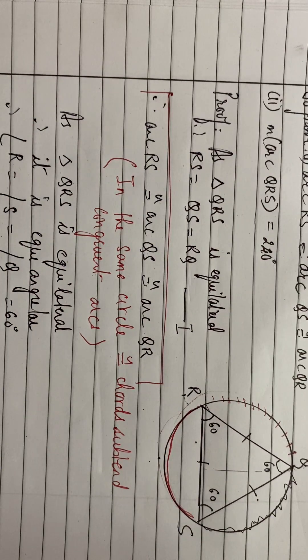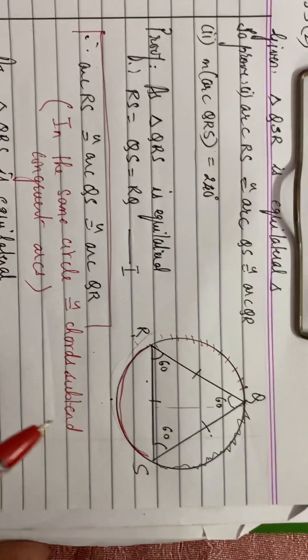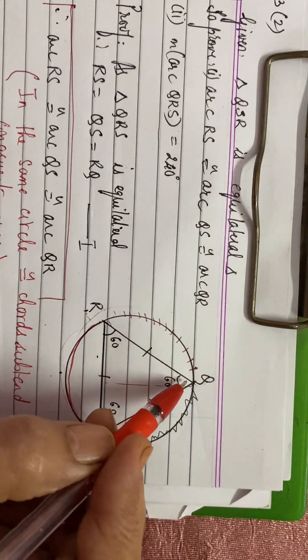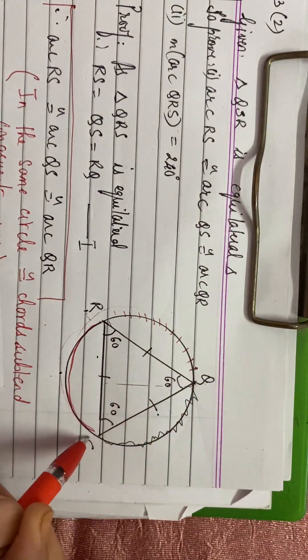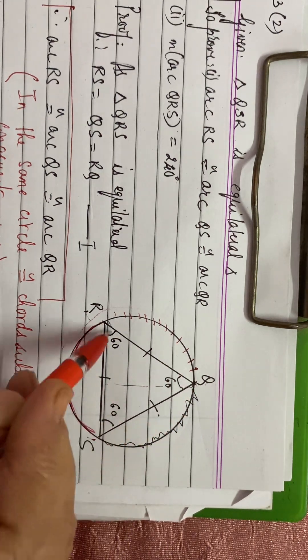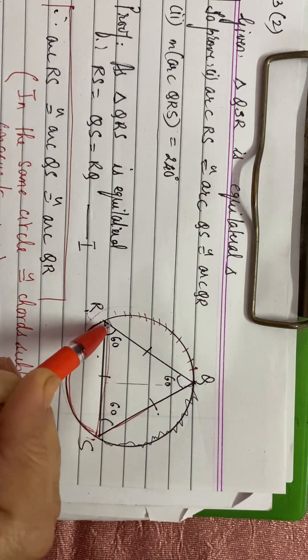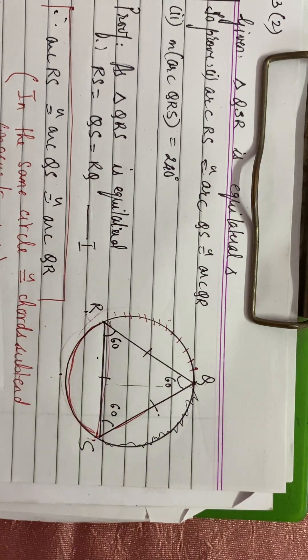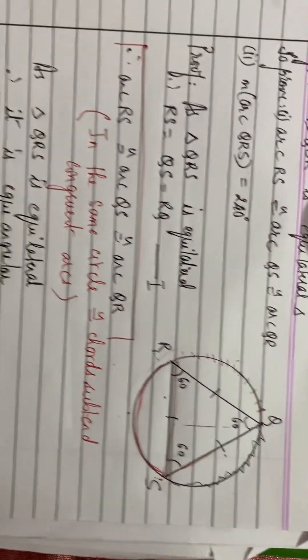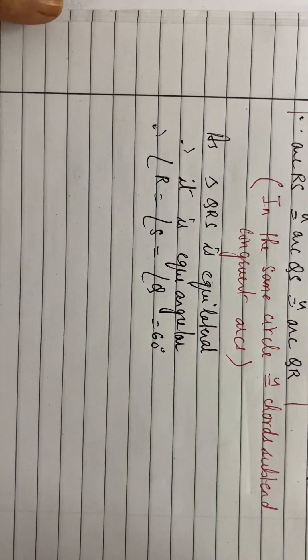Angle R equals angle S equals angle Q equals 60 degrees. Now if we consider this angle QSR, this angle, measure of this angle QSR is half of the measure of the intercepted arc by inscribed angle theorem. So using this theorem, we will find out the measures of the arcs.